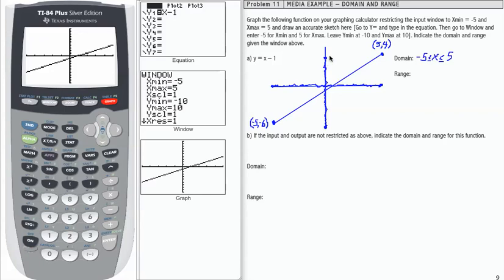If I want to write that using correct notation, my outputs travel from their smallest value of negative 6, less than or equal to y, less than or equal to 4. So there are my domain and range written using correct function notation.